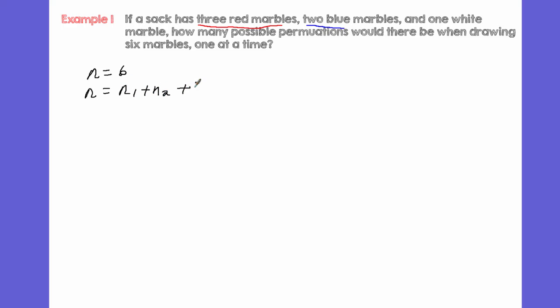And the distinct objects here, n sub one is equal to three, that's three red, n sub two is equal to two, and n sub three is equal to one. So the objects here: n one is the three red marbles, two blue, and one white.